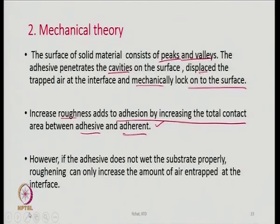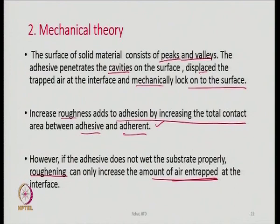However, if the adhesive does not wet the substrate properly, roughening can increase the amount of air trapped. Many times we may not get the right strength expected from an adhesive joint. Roughening may lead to trapping of air — micro pockets of air where it will remain — and all those air pockets are a source of weakness, reducing the interfacial strength. There are certain technical products where the strength of the joint is very very important, and one such product is aerostat products.